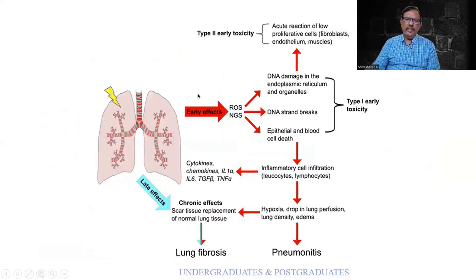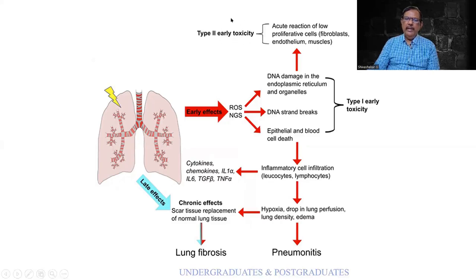Coming to one organ — the lung. There can be reactive oxygen species or nitric oxide synthase effects. The effects include DNA damage and strand breaks, epithelial as well as blood cell death. Various mediators are produced secondary to inflammation, and chronic effects can lead to lung fibrosis. Hypoxia can lead to pneumonitis, and there can be secondary toxicity with low proliferation of fibroblasts, endothelium, and muscle cells.